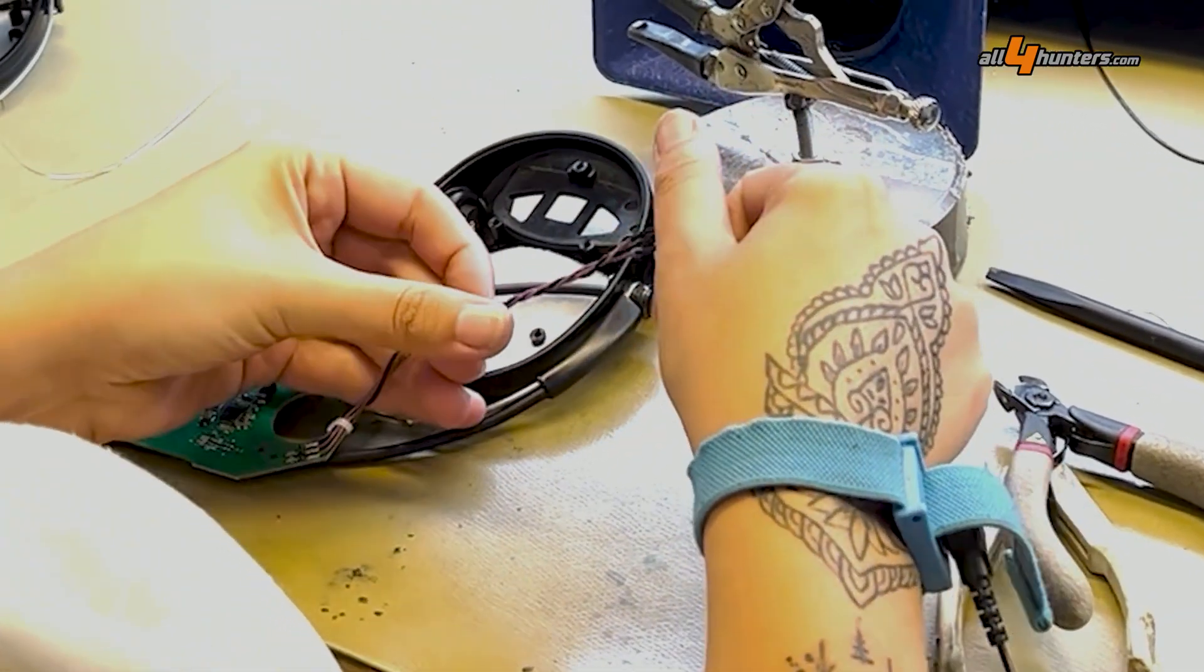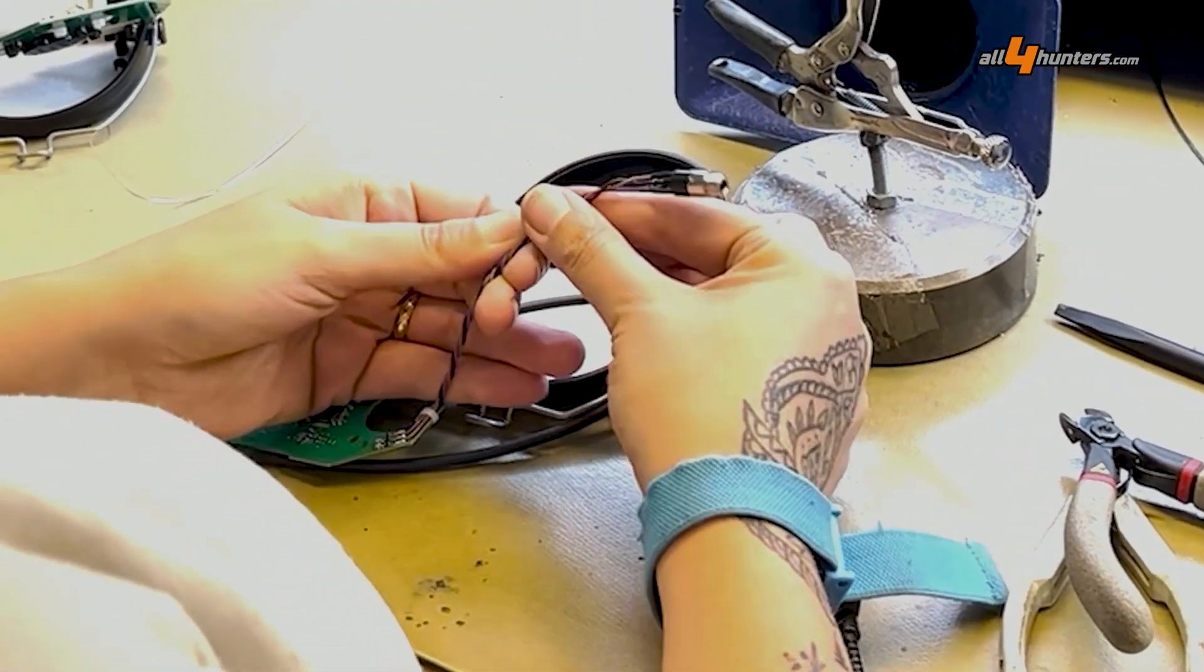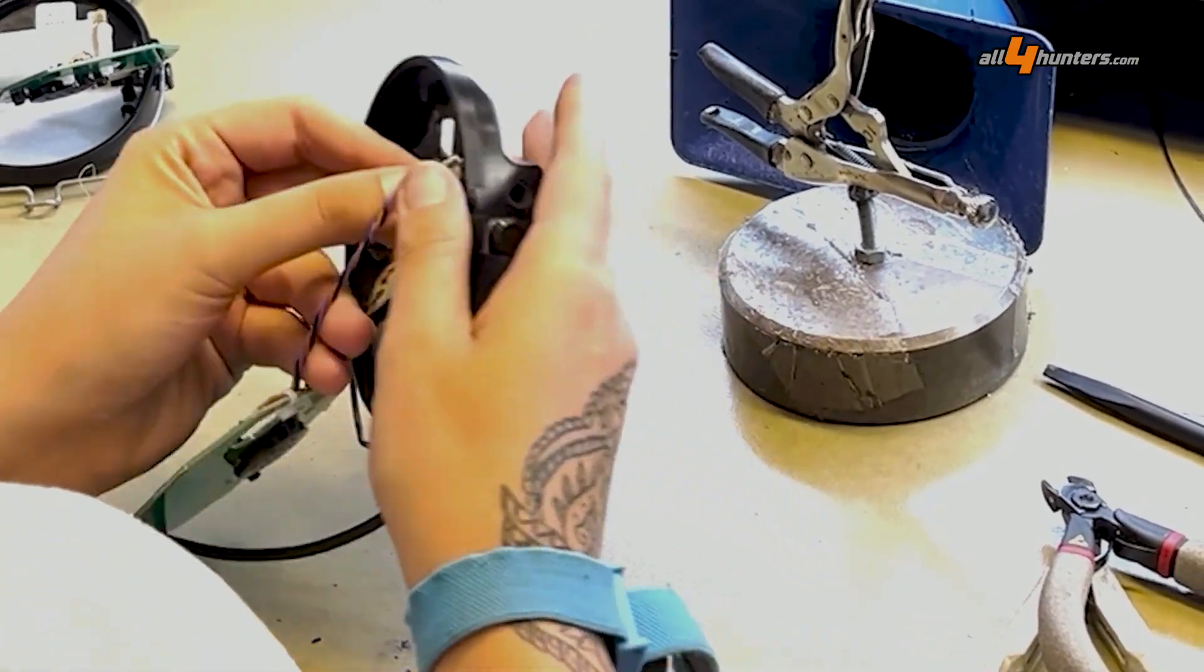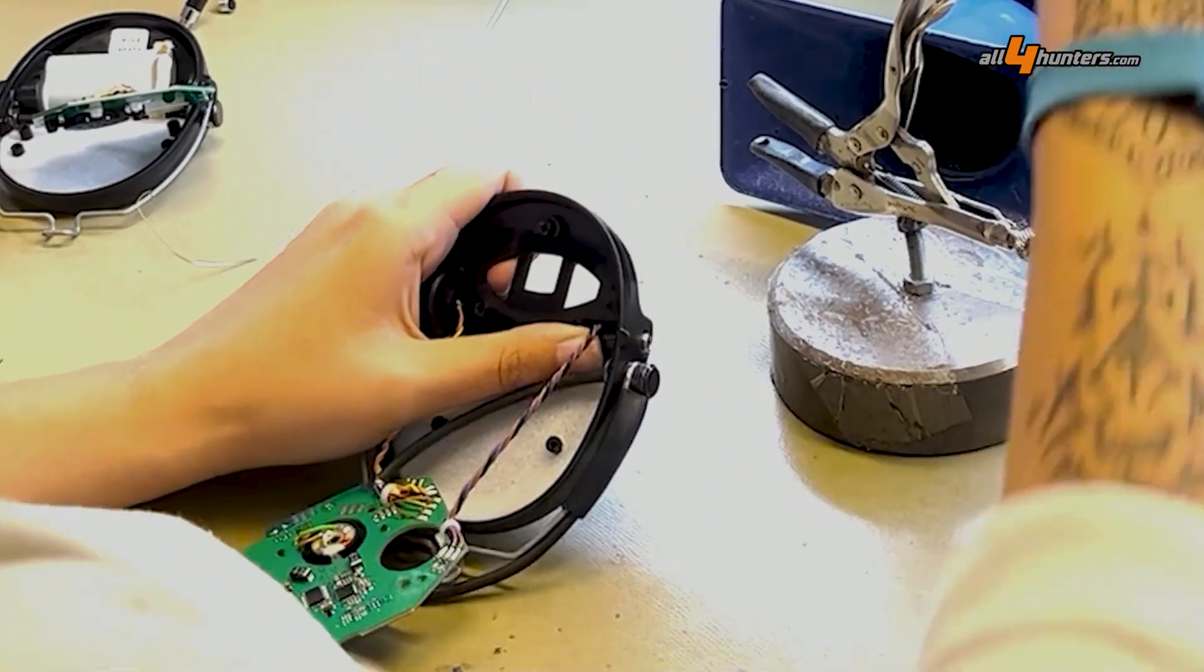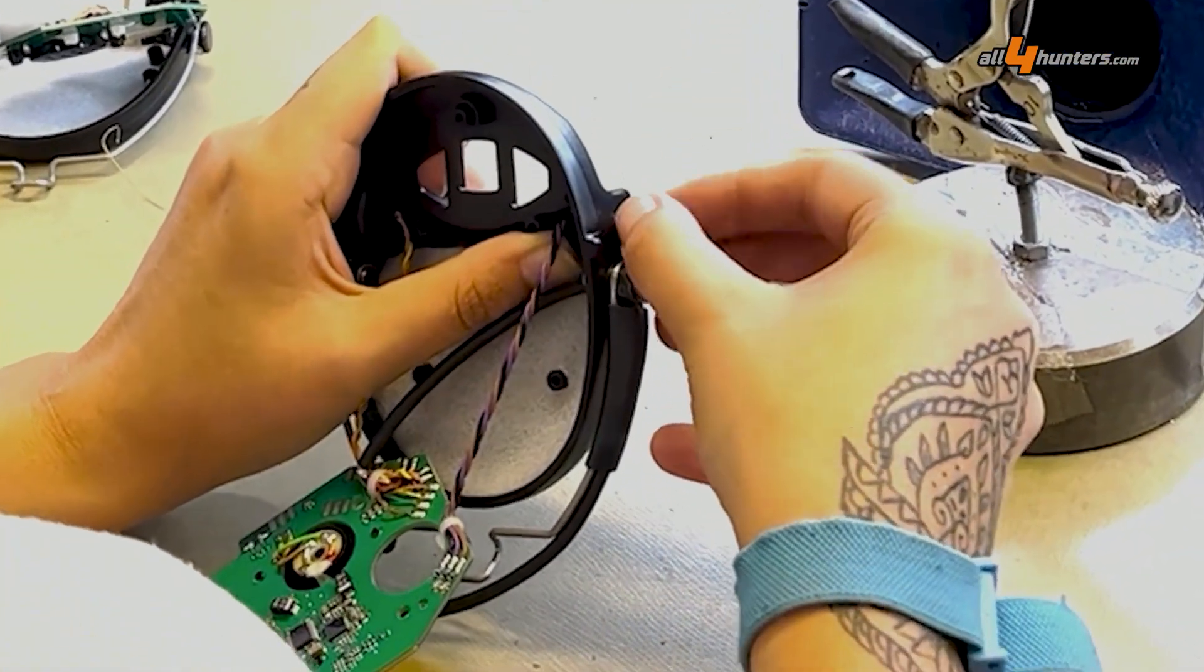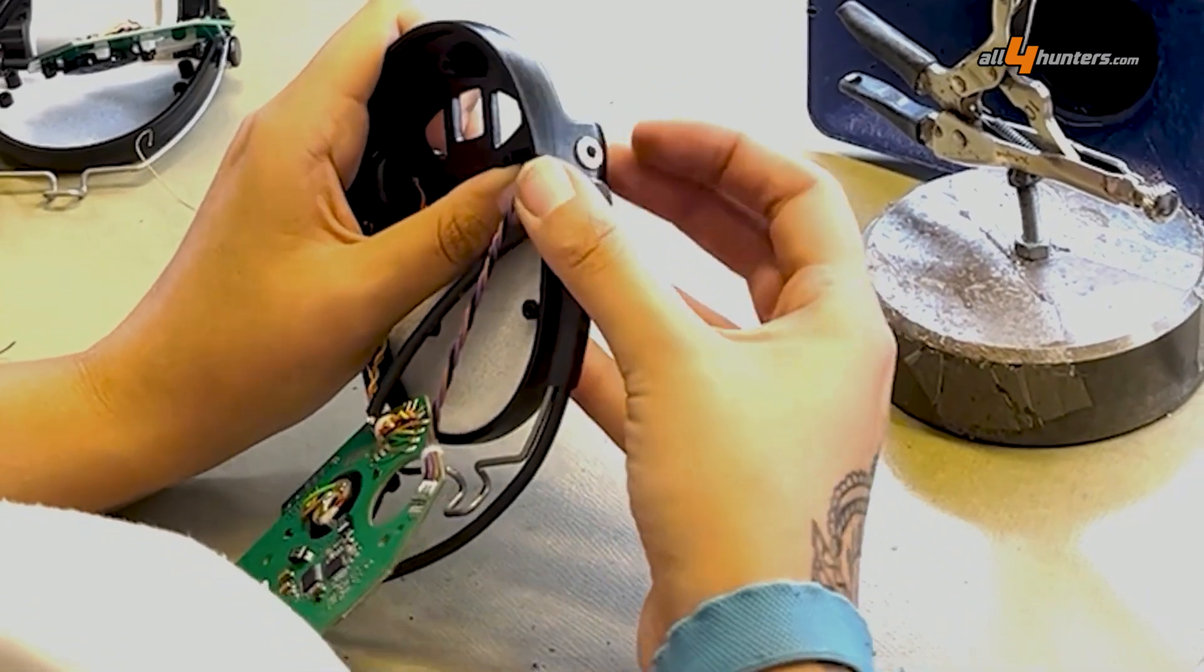Finally, twist the cables, roll them up, and then insert the 3.5 mm jack socket, which allows the connection to an audio device such as a hunting radio, as they're very popular in Sweden and many other countries.